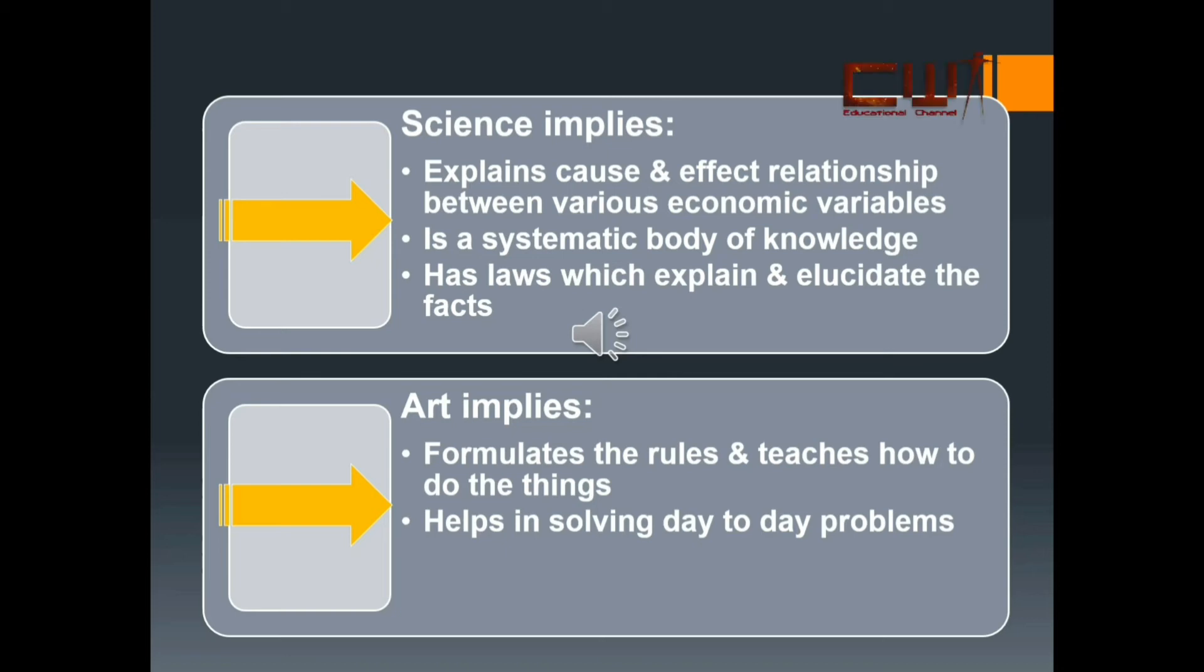J.M. Keynes has defined art as a system for the attainment of a given end. The object of art is to formulate the rules and it teaches us how to do things. It is practical as compared to a science which is theoretical. Economics can be regarded as an art because it gives us basic values with which we can solve various economic problems of the society. It helps us in solving the day-to-day economic problems of life.